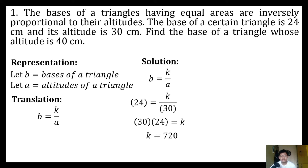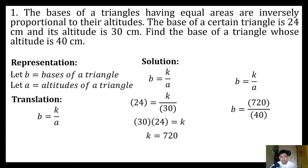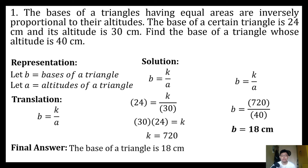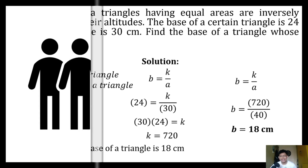We substitute the given and then multiply both sides by 30, so 30 times 24 — we will get a constant of variation which is 720. Then, knowing the constant of variation, we can now solve for the base of a triangle whose altitude is 40 centimeters using the same equation, substituting the constant of variation and our new altitude. Dividing them, we get 18 centimeters. Therefore, the base of the triangle whose altitude is 40 centimeters is 18 centimeters.